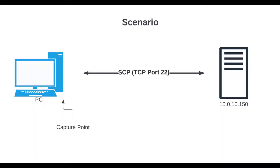The scenario is as follows: we have a PC connecting to a server over SCP, which is on TCP port 22, and for whatever reason we're experiencing slowness. The capture point, meaning where we actually took the packet capture, is on the PC. When we get to some advanced cases where we're trying to identify where the loss is coming from, that will be very important to note.